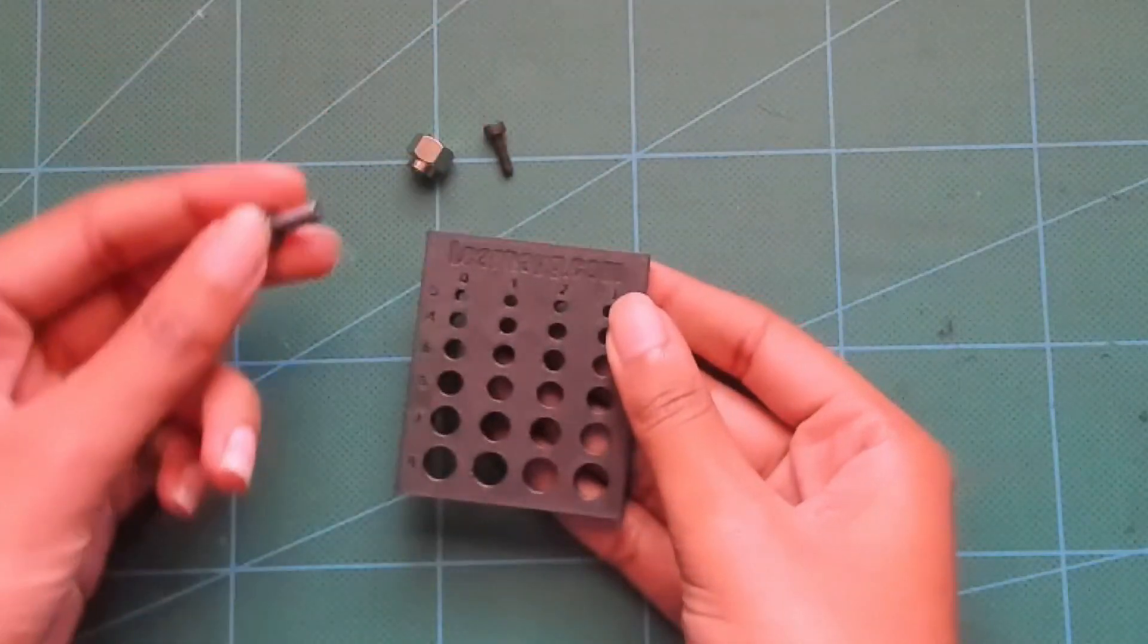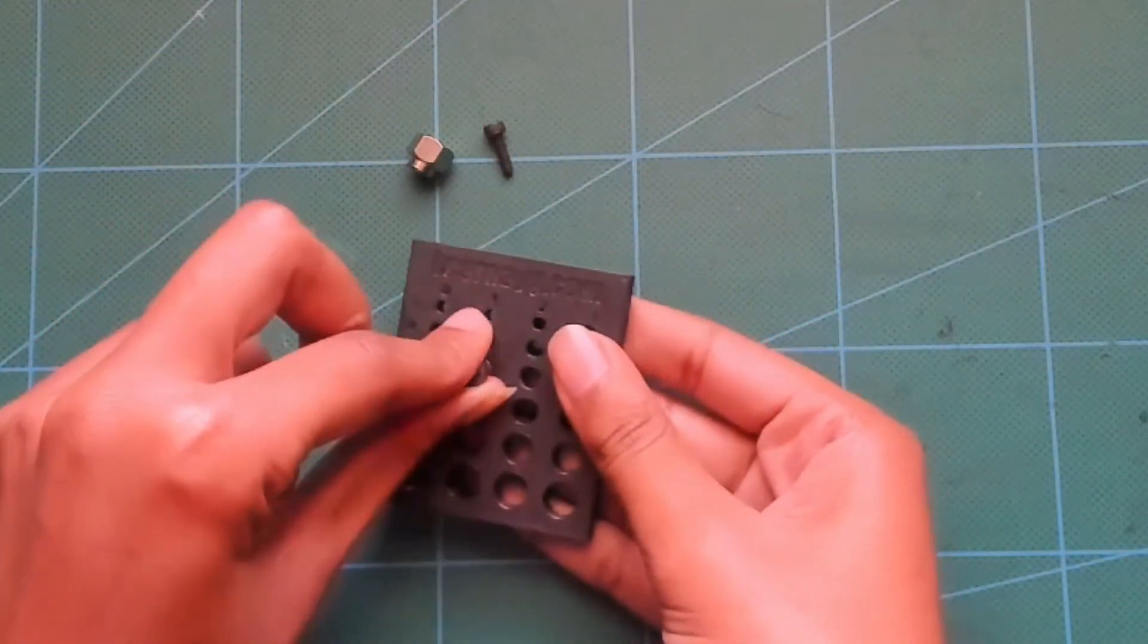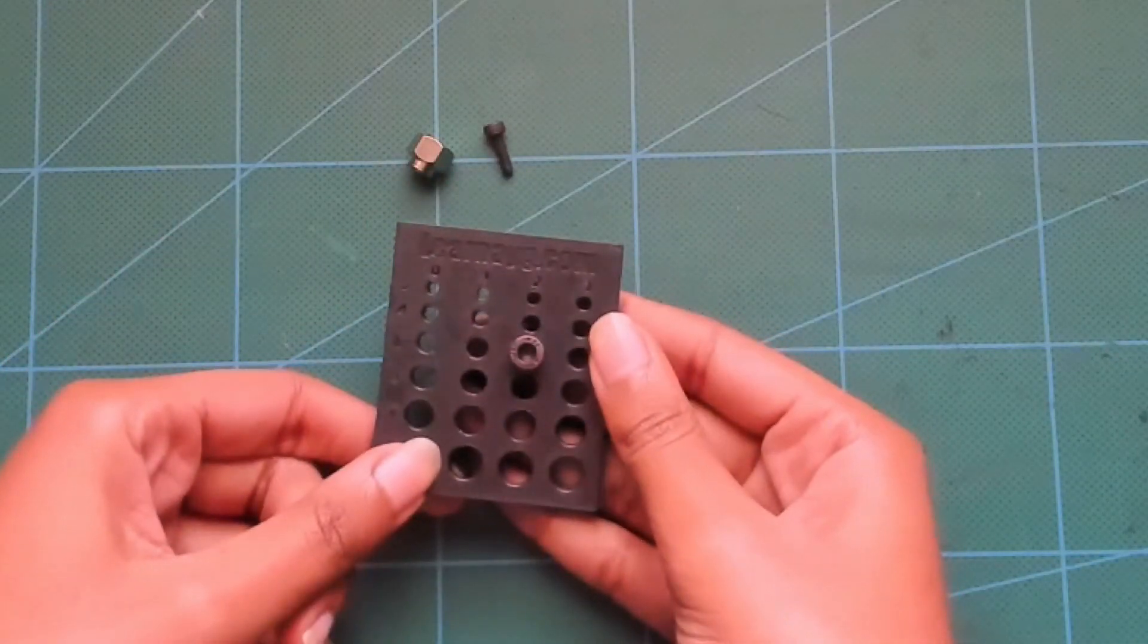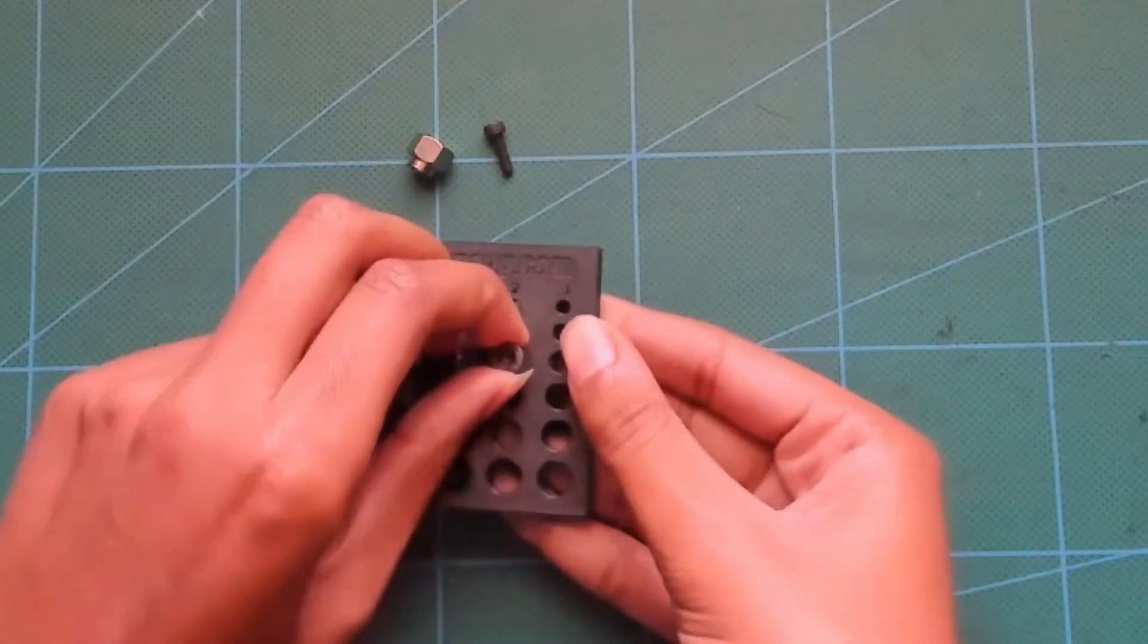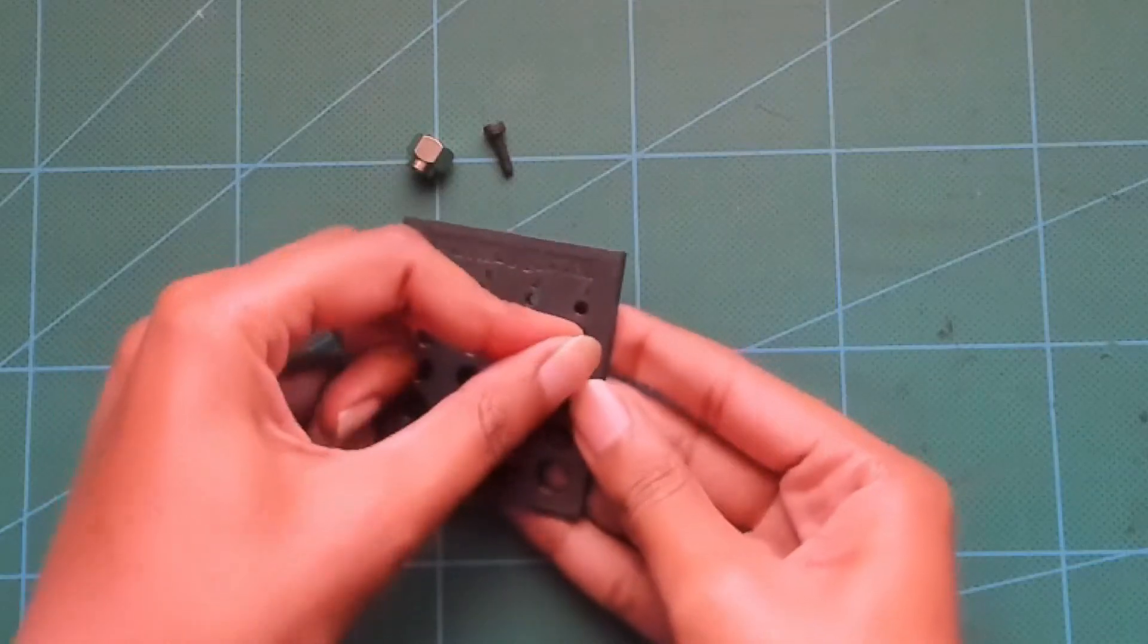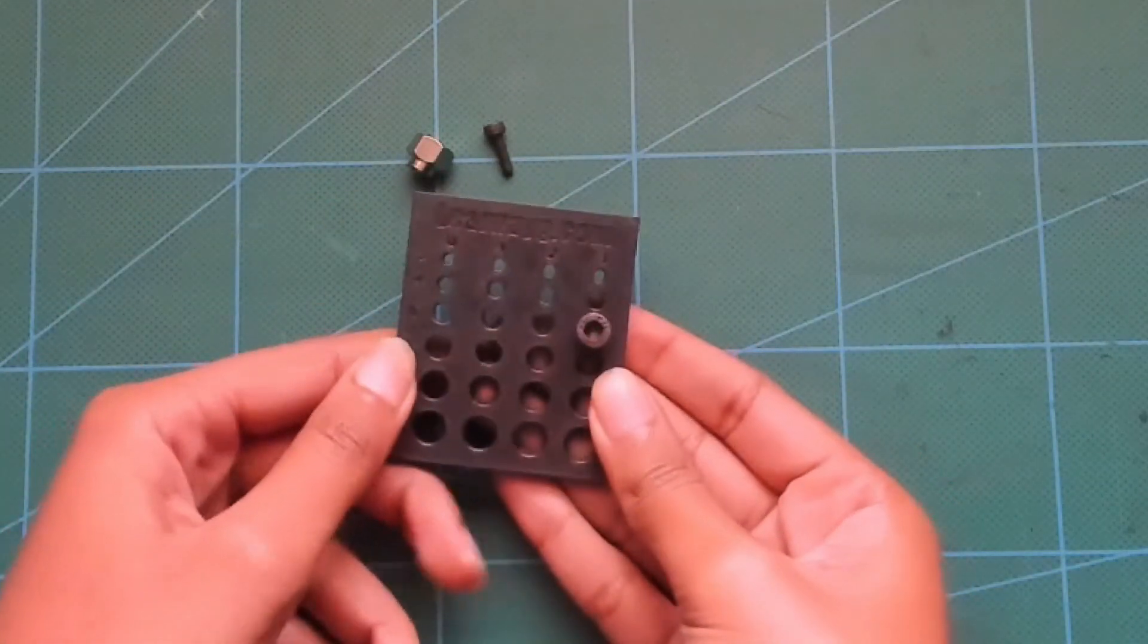We can do the same for this M5 screw. You see, it doesn't fit in the 0.0 or the 0.1, but it does fit perfectly in the 0.2. It will also fit in the 0.3, but it does leave wiggle room instead of having a nice tight fit.